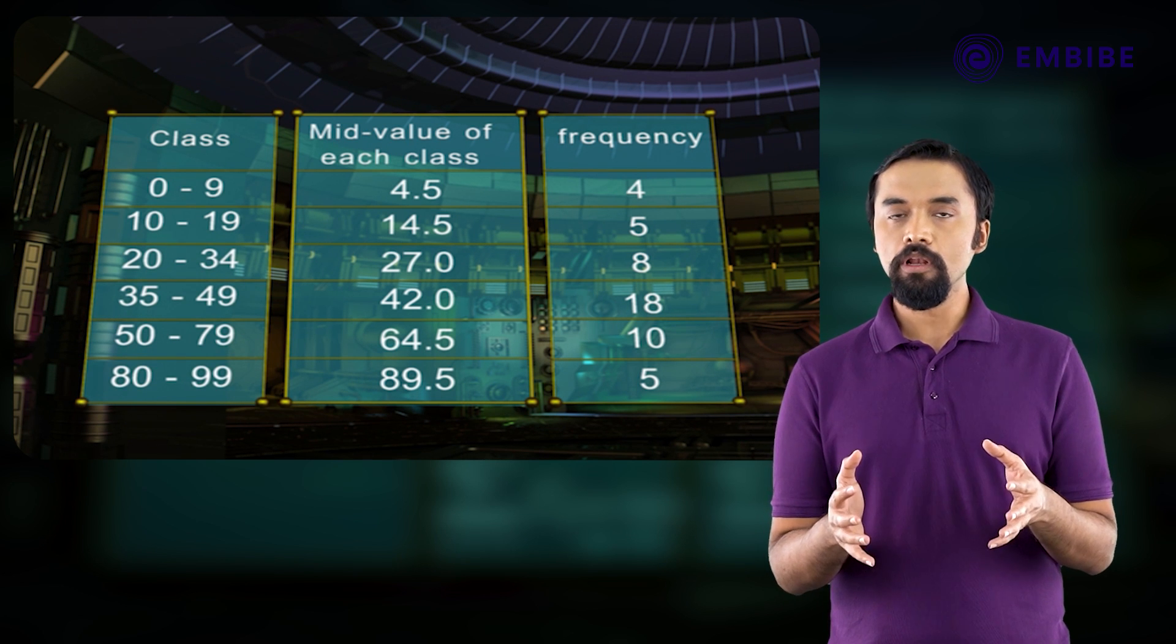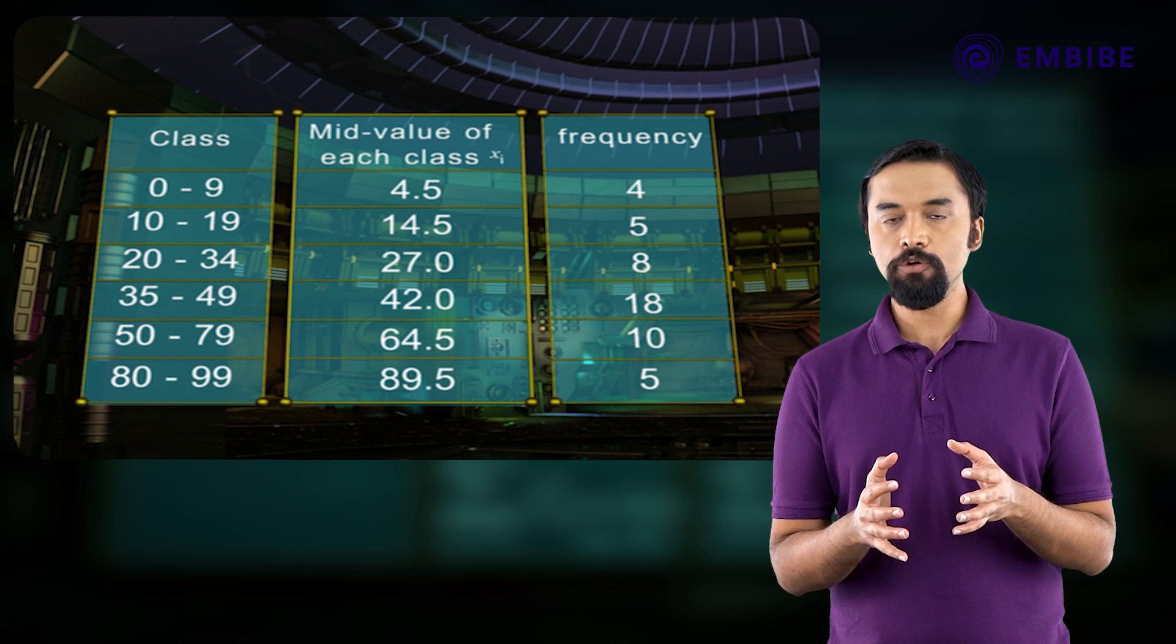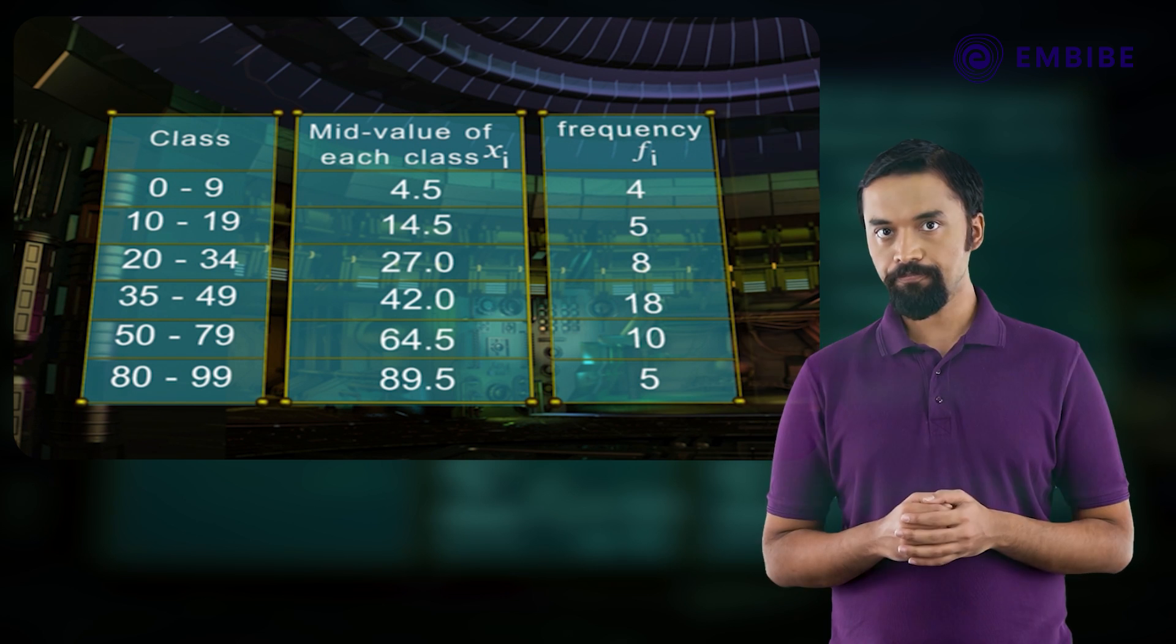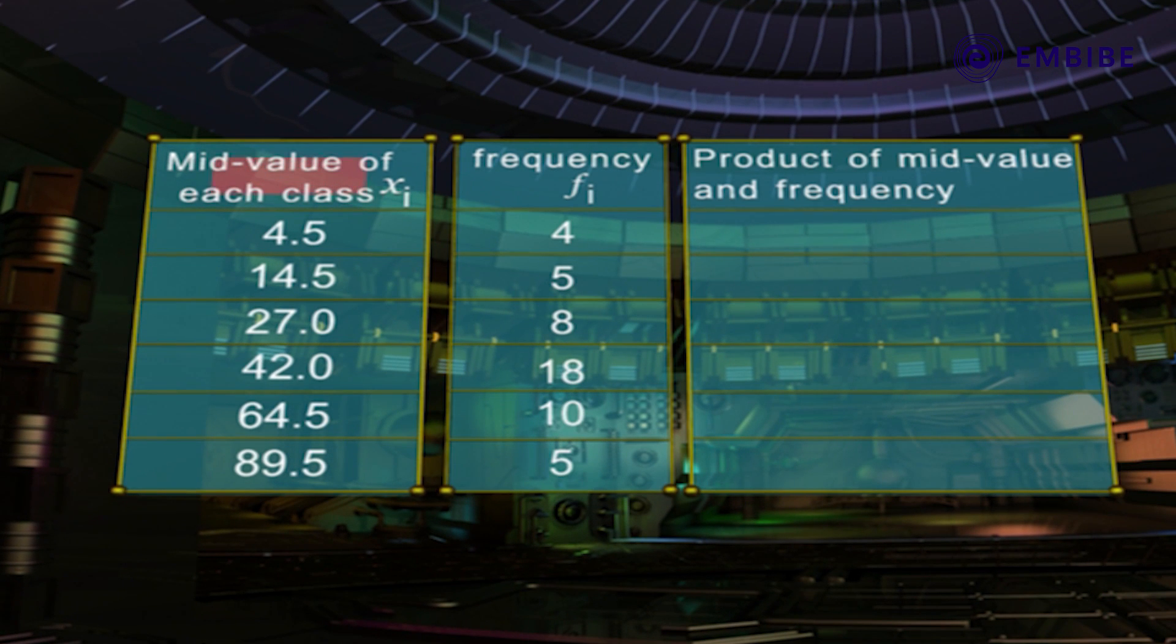To compute the mean of the group data, we form a table comprised of mid-value xᵢ and the corresponding frequency fᵢ. The columns are: mid-value of each class xᵢ, frequency fᵢ, and product of mid-value and frequency fᵢxᵢ.